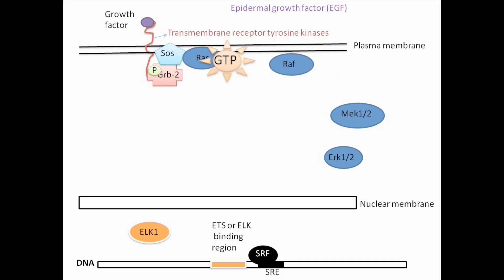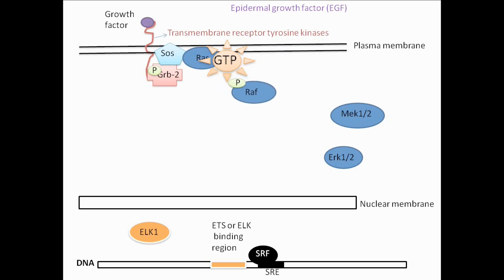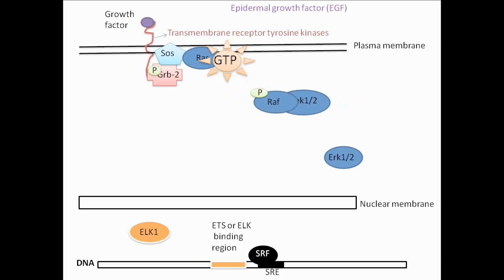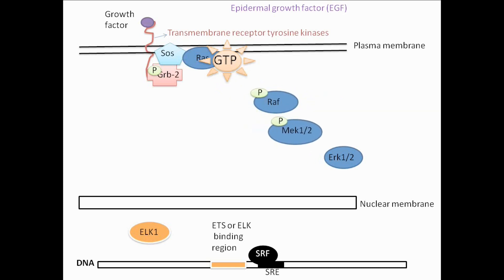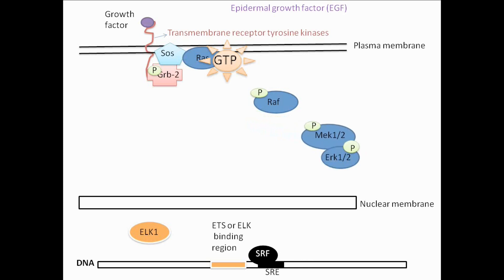This causes activation of RAS, leading to phosphorylation of RAS proteins. RAF proteins are then recruited and get phosphorylated. The RAF protein can then phosphorylate MEK, leading to MEK phosphorylation. MEK then phosphorylates ERK1 or ERK2, leading to ERK phosphorylation.